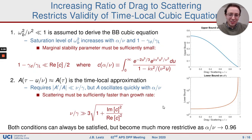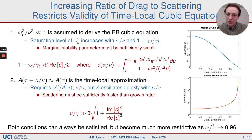The approximations that we made become more restrictive as the amount of drag to scattering becomes comparable. You can always satisfy the approximations, but it becomes more difficult.